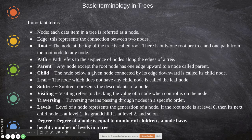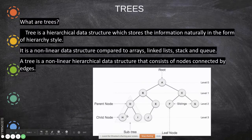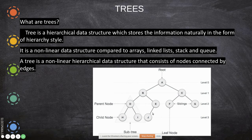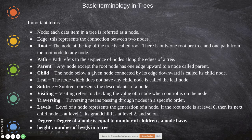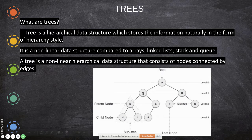A child is the node below a given node connected by its edge downward. A leaf node is the node which does not have any child — H, I, J, F, G are all leaf nodes. Siblings are nodes that have the same parent. A subtree represents the descendants of a node — this is a subtree of this parent, and these things will be a subtree of A.